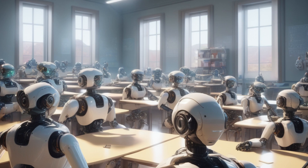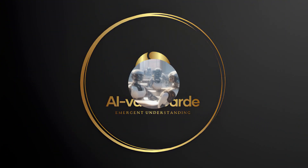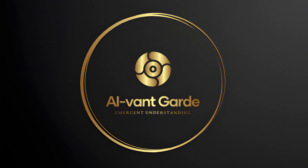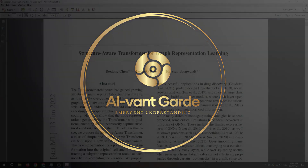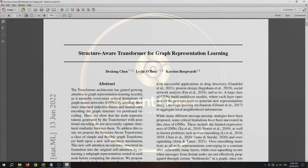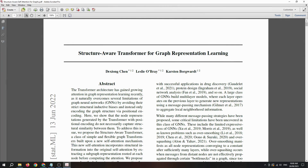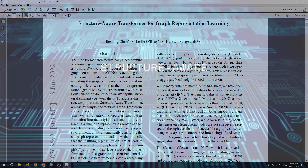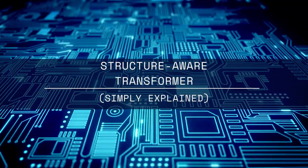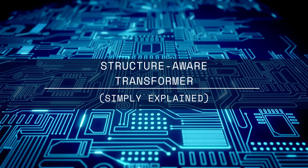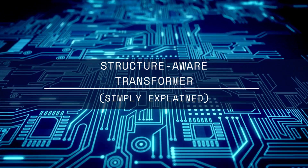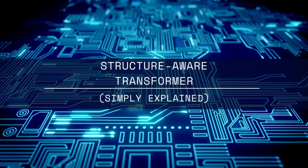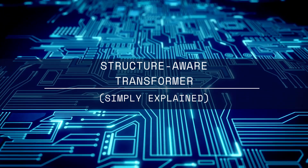Welcome, my curious learners, to AI Vaunt Guard. In today's video, we are breaking down a research paper on a new type of neural network, the structure-aware transformer for graph representation learning. So let's dive in and explore the marvels of this extraordinary architecture.